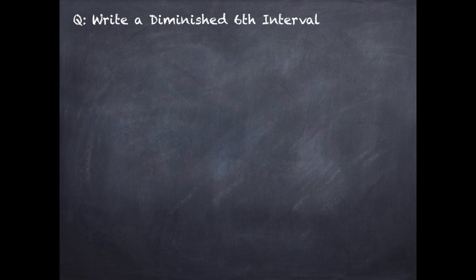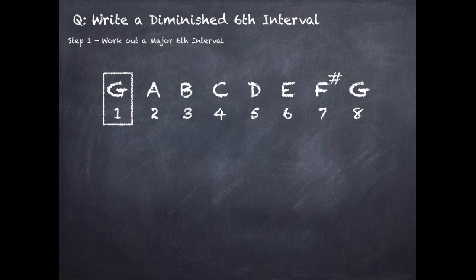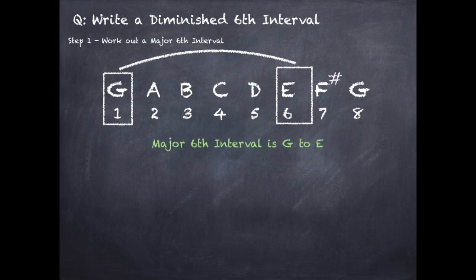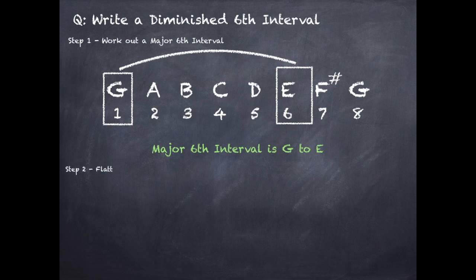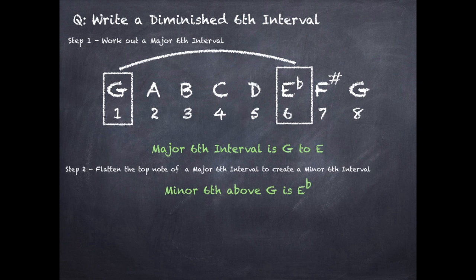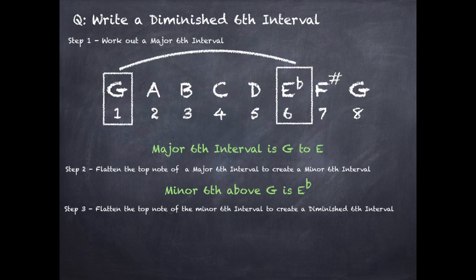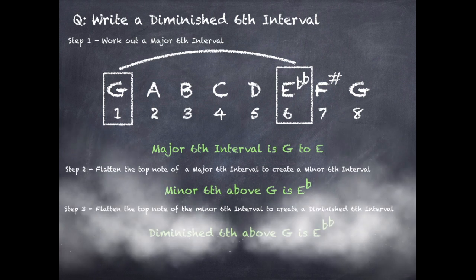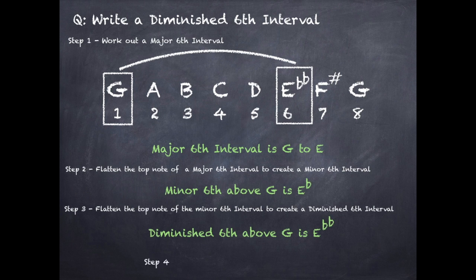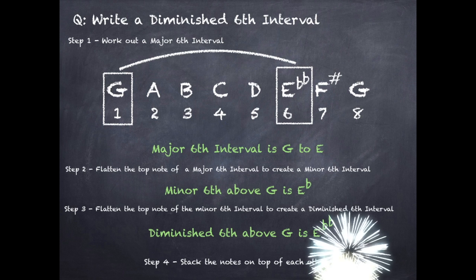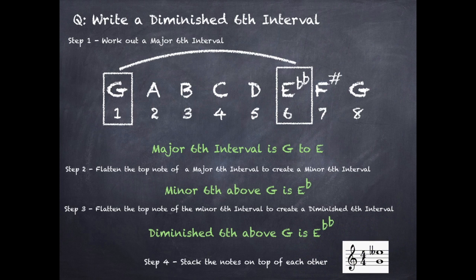To write a diminished sixth interval, first work out a major sixth interval. We go from the first note of the G major scale, which is G, to the sixth note, which is E — major sixth is G to E. Step 2: convert this to a minor sixth by flattening the top note, so E becomes E flat — minor sixth is G to E flat. Step 3: flatten the top note of the minor sixth to create the diminished sixth — E flat becomes E double flat. Diminished sixth is G to E double flat. Step 4: stack the notes on the stave. It's a four-step process.